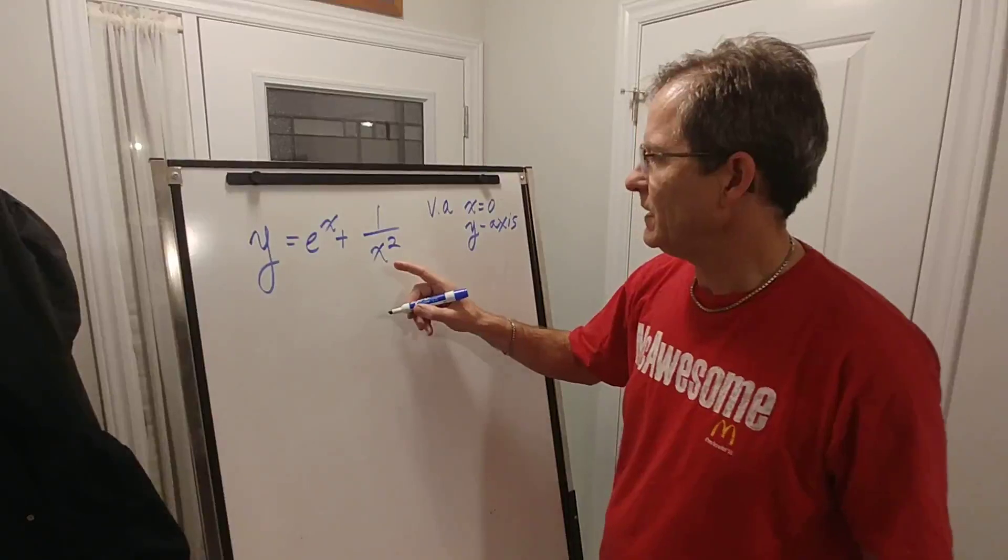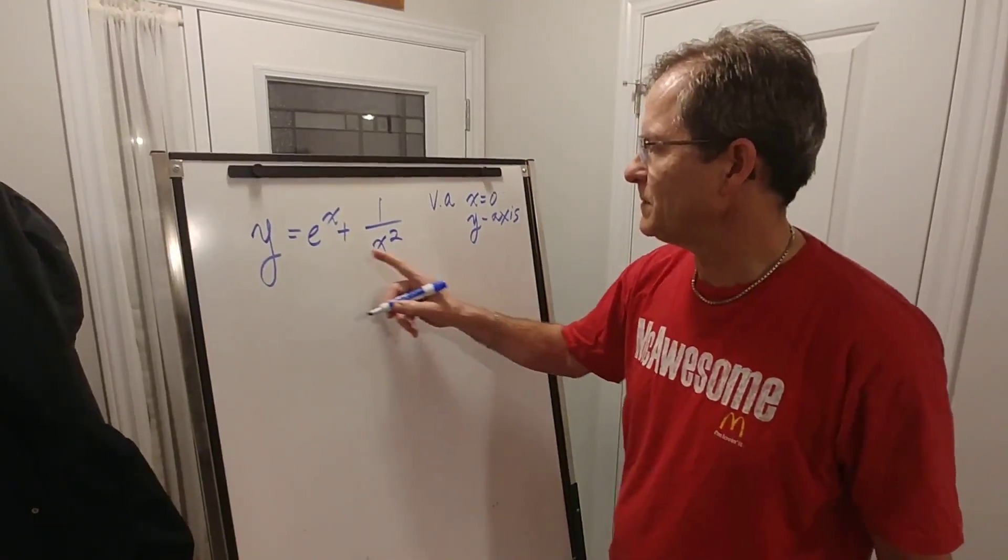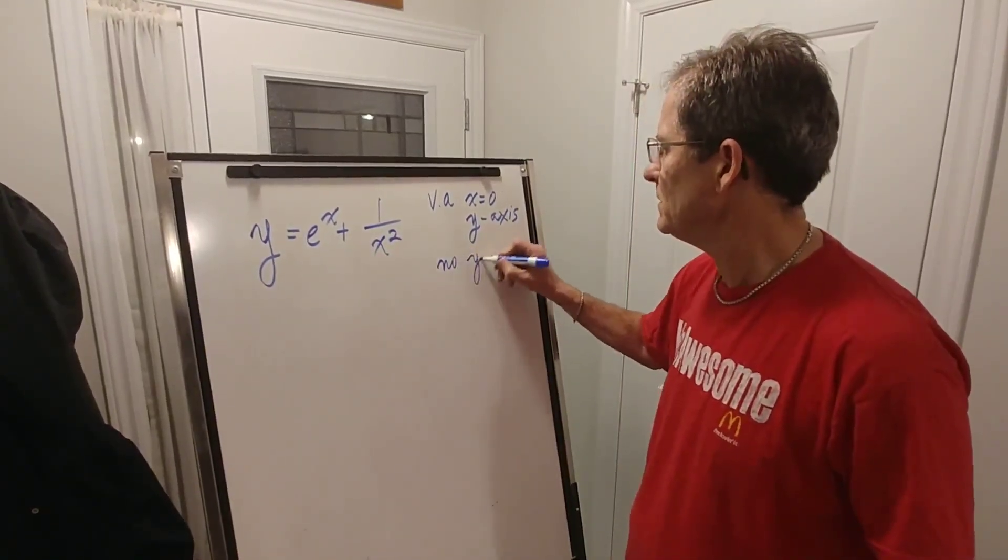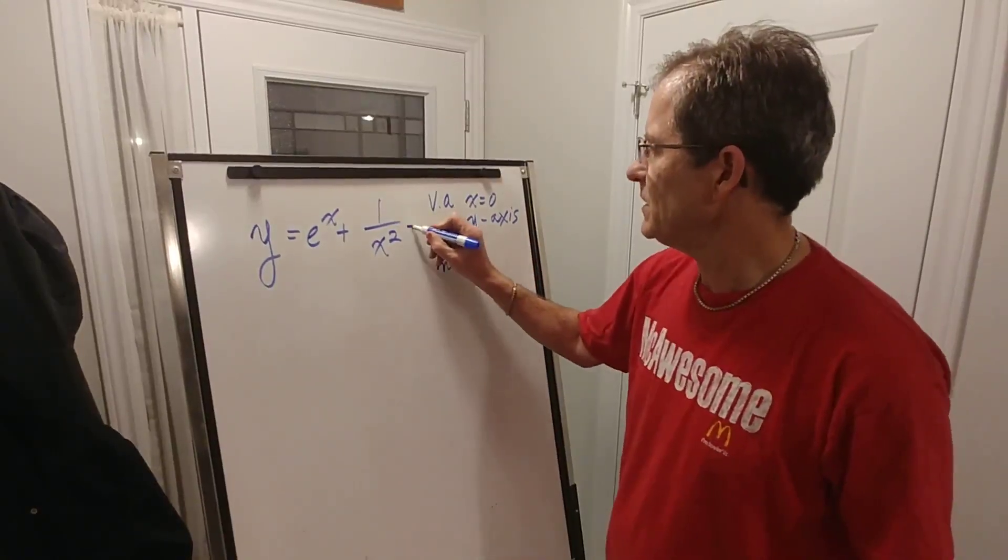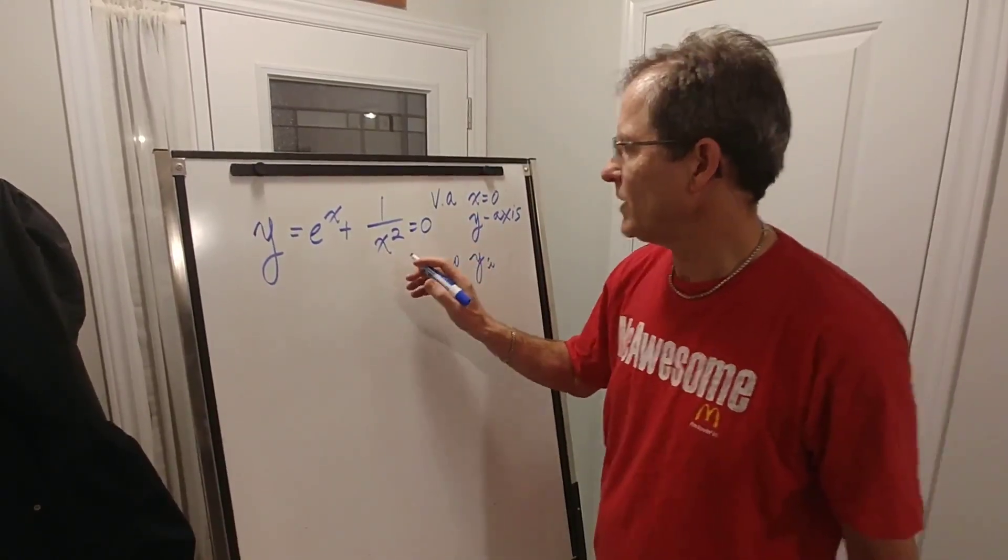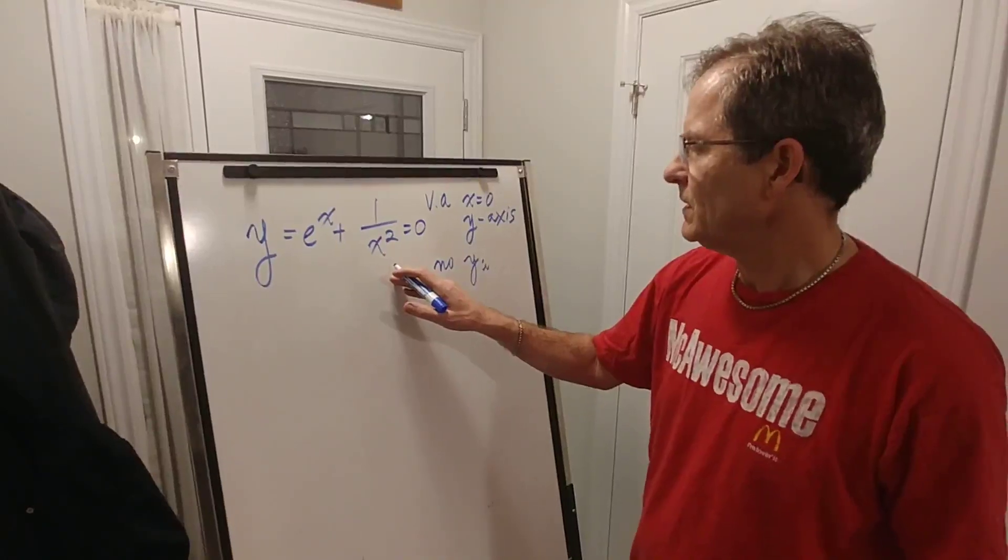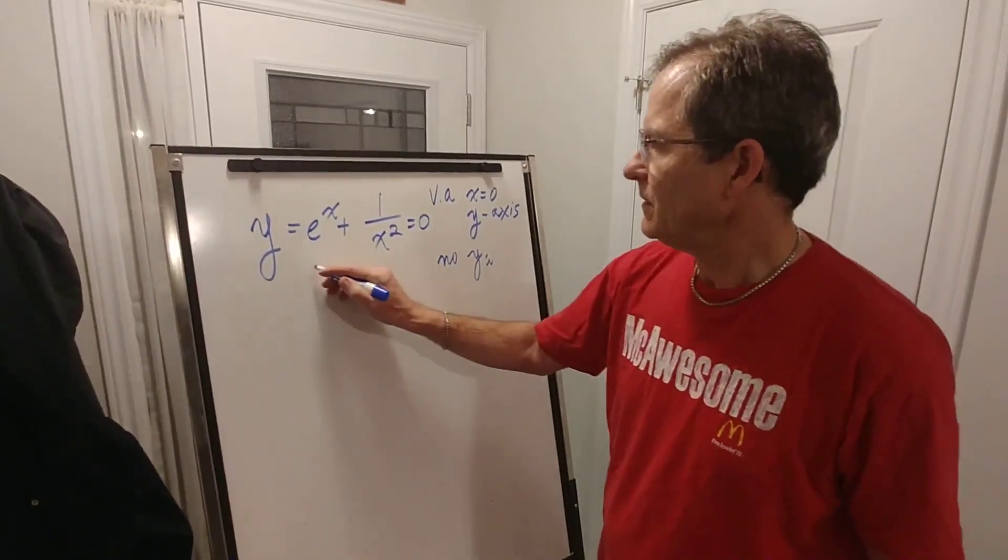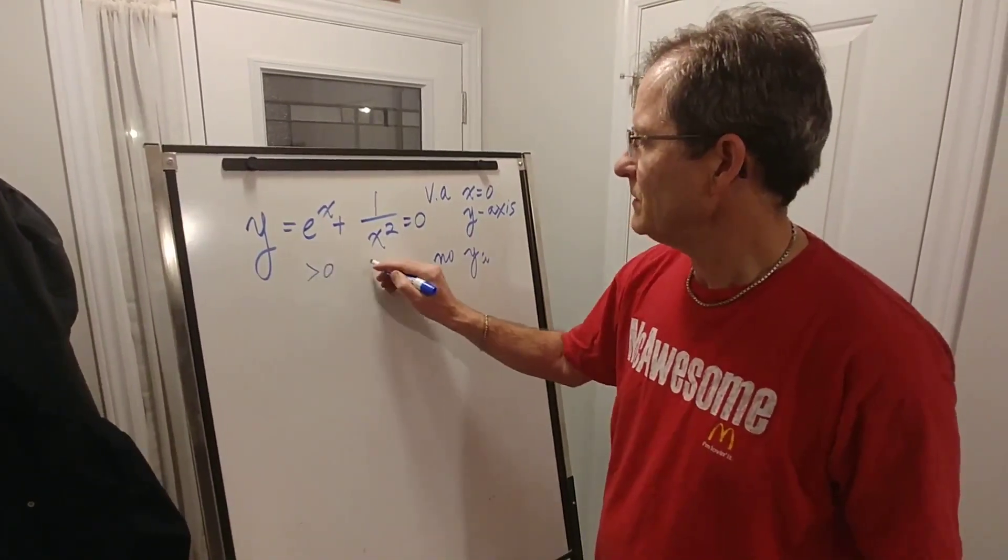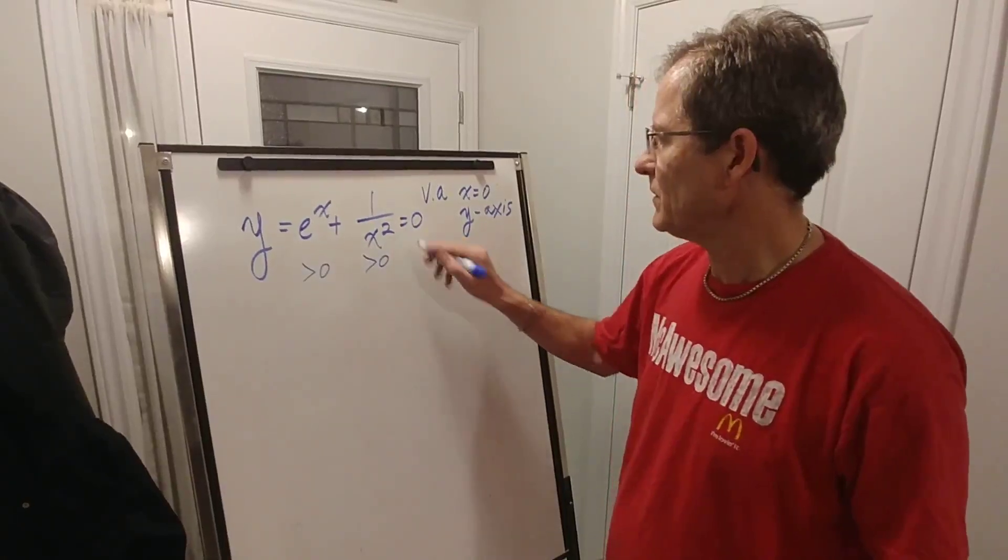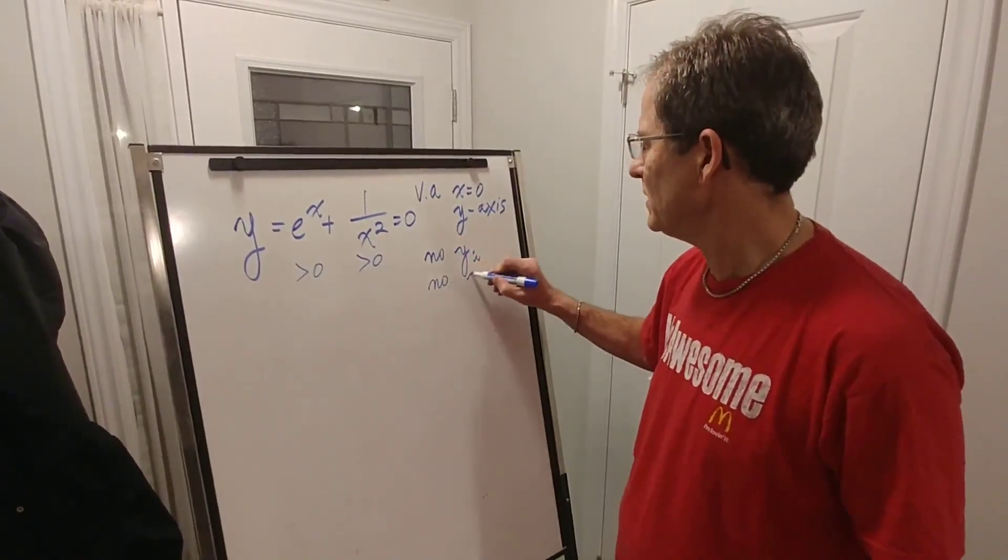If I set x equals zero to find a y-intercept, again I can't, so there's no y-intercept. If I set this equal to zero and try to solve for x to get the x-intercept, that's always positive and that's always positive, so you're never going to get zero, so there's no x-intercept either.